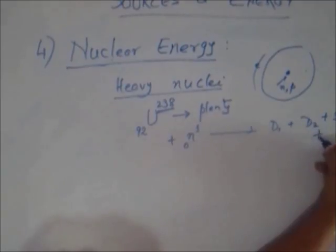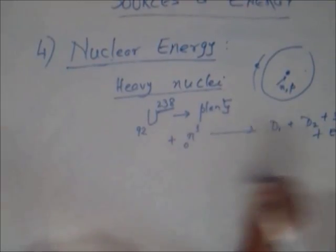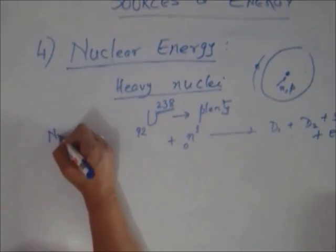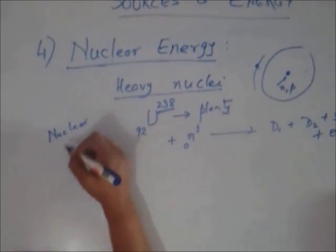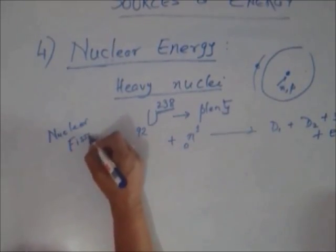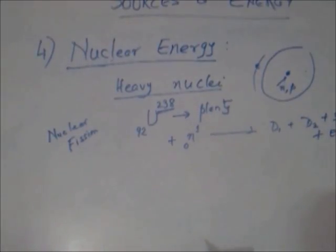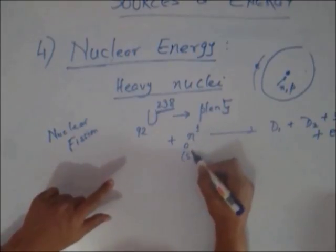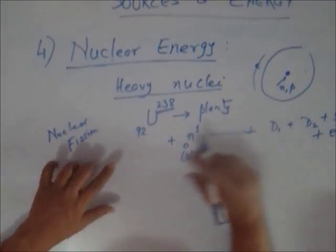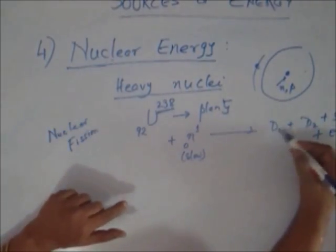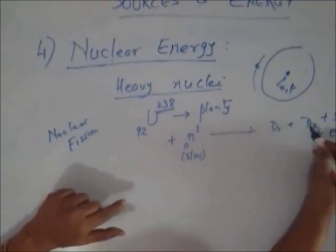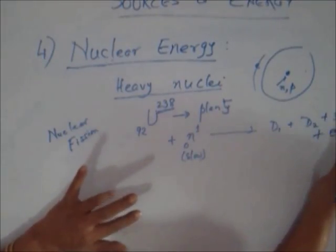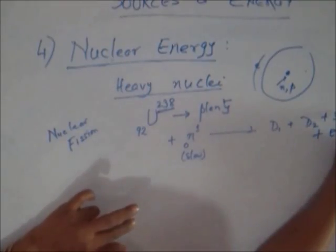Plus a large amount of energy is released. This is called nuclear fission - fission means something breaking, similar to how an amoeba multiplies. This requires a slow-moving neutron; it breaks up into two parts, two daughter nuclei of more or less equal mass.